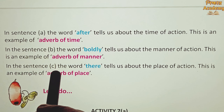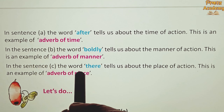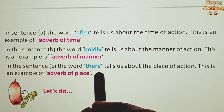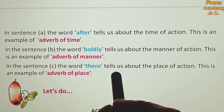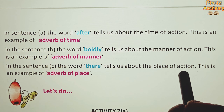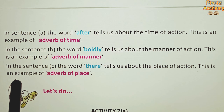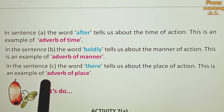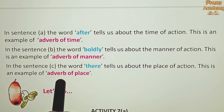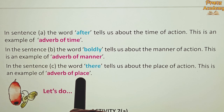Sentence C — the word 'there' tells us about the place of action. There he began fasting. This is an example of adverb of place.